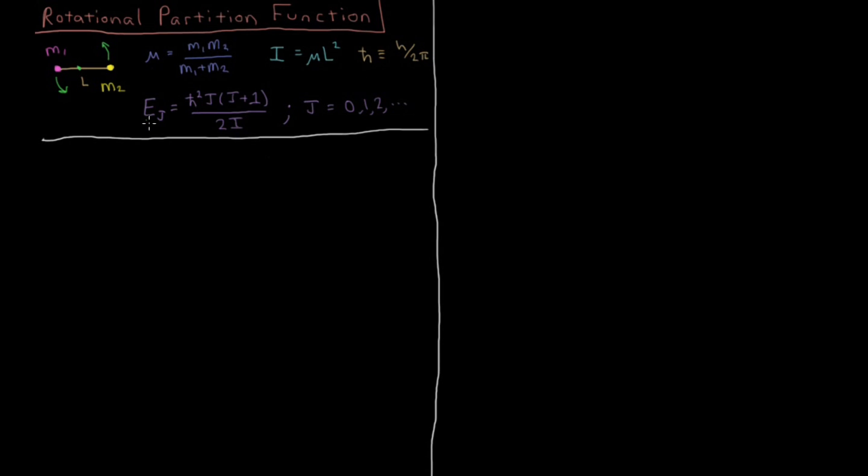So we've got energy levels that go up quadratically with this integer j for the allowed energy levels of how this molecule can rotate. We want to get our partition function for these given energy levels.